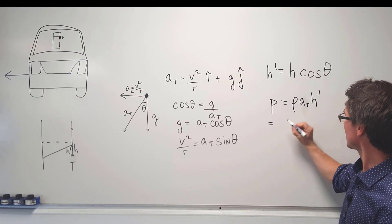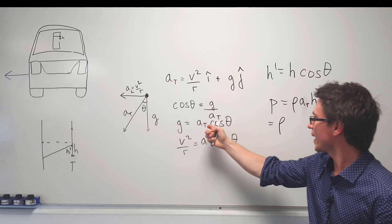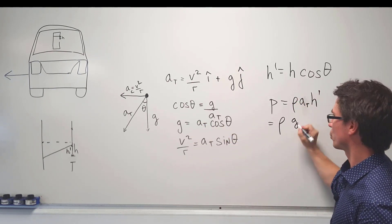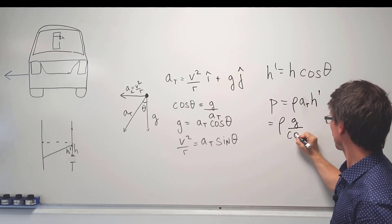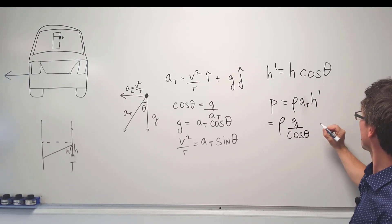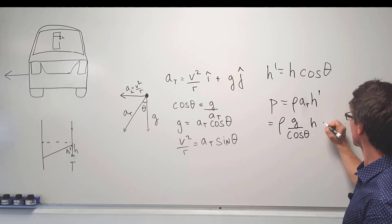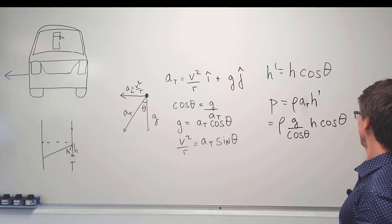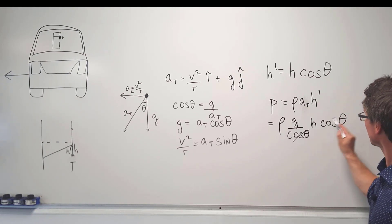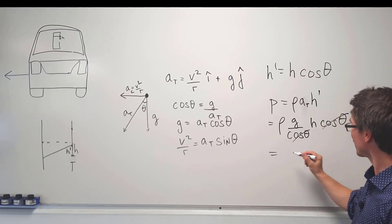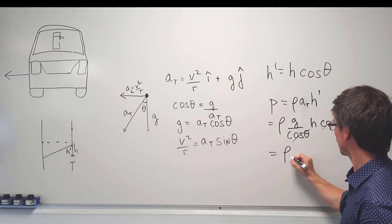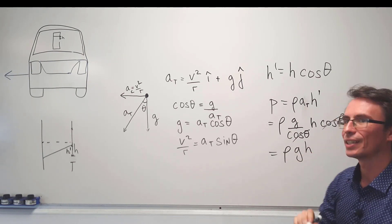Well this is actually equal to the density times AT, which will just be equal to G over cosine theta, and H prime is given by H cosine theta. Luckily we can cancel those and we can get that once again our standard pressure is just equal to rho G H.